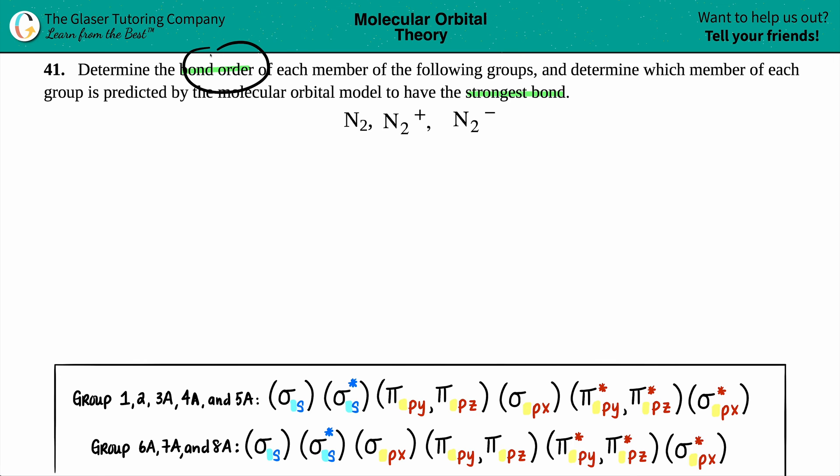Bond order comes from bonding and antibonding electrons, and we can only find those by drawing out a molecular orbital configuration. So that's what this mess is down here, but I promise it's not as scary as it looks. These configurations are reliant on valence electrons, so first we have to find out how many valence electrons are in N2.